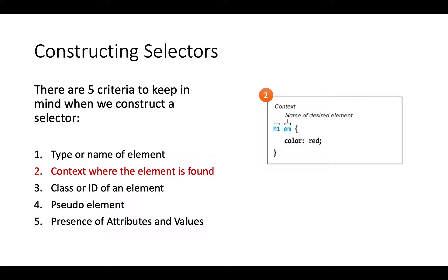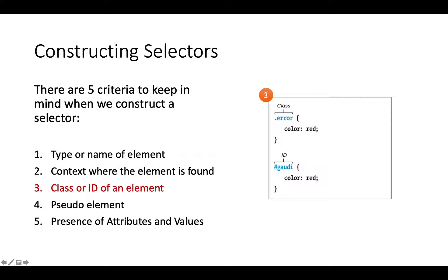You can change the formatting of EM. We have two elements separated by a space, and the spacing between them is quite important. You can also specify by classes or ID. We should all know what classes and ID are — can anyone tell me the difference between class and ID? When should you use a class and when should you use an ID?